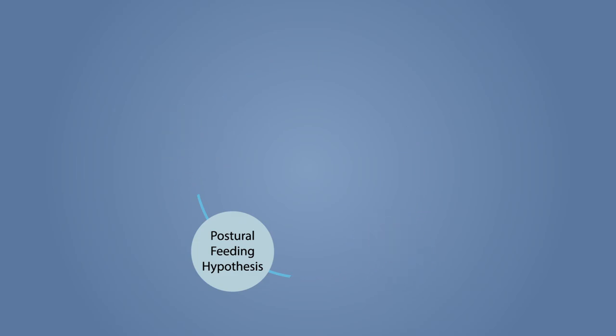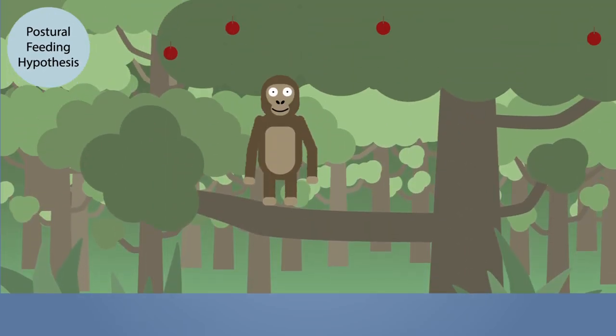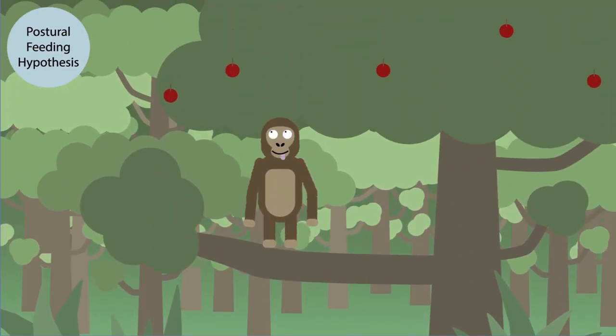If bipedalism did evolve in trees, then the postural feeding hypothesis might explain why. Anthropologist Kevin Hunt suggests that bipedal movements may have evolved into regular habits as they were convenient for gathering hard to reach food. This could explain why early hominids such as Ororin Tugenensis were only partially bipedal.